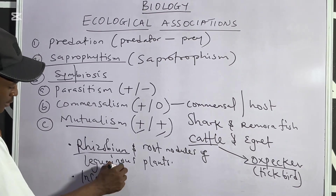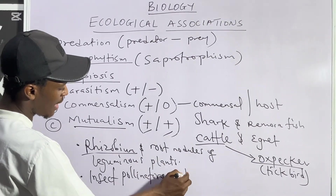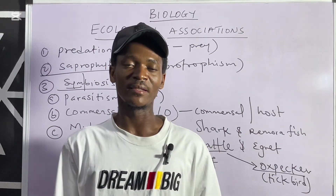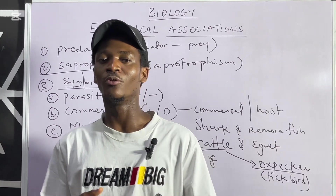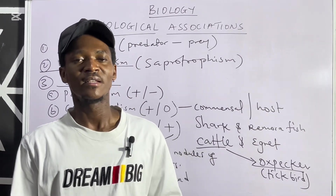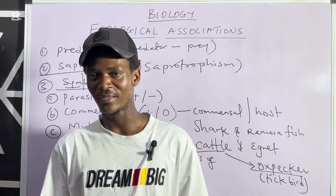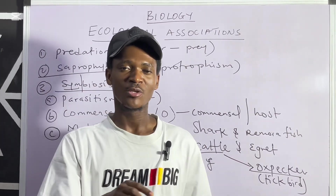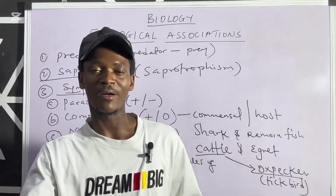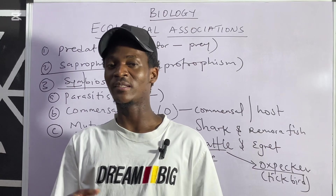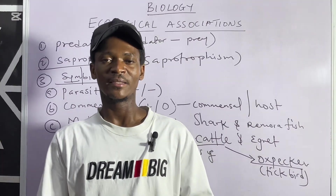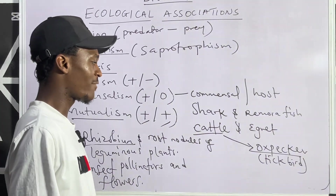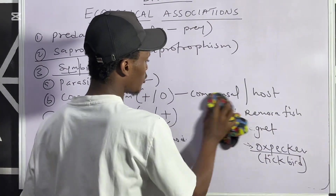Another example of mutualism is insect pollinators and flowers. Insect pollinators visit flowers to feed on nectars, deriving food from the flowers. In the process, they transfer pollen grains from one flower to another, which brings the benefit of pollination to the flowering plants. Both organisms are benefiting.